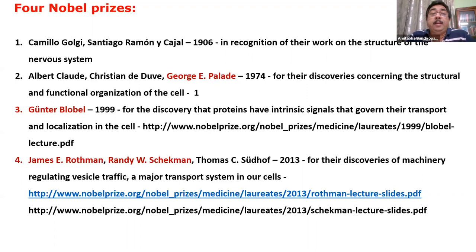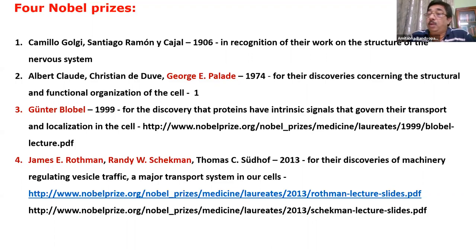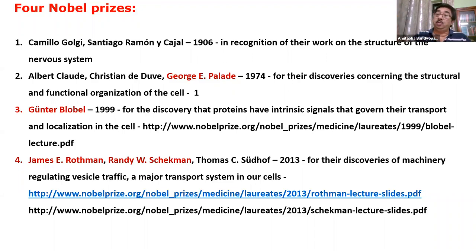Then Günther Blobel, who was mentored by Palade, got the Nobel Prize all by himself just because of his discovery of the signal peptide and the entire mechanism of how secretory proteins are inserted into the endoplasmic reticulum. He worked out every single detail of it, and whatever he discovered — confirmed by 1991 — is still considered the gold standard. Then the work of Randy Schekman, Jim Rothman, and Thomas Südhof for figuring out the molecular mechanism from ER to Golgi to outside of the cell. The names in red will be the focus of this series of lectures.